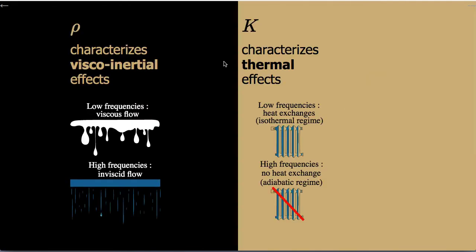So why deal with Rho and K? Zwikker and Kosten showed in 1949 that Rho characterizes the visco-inertial effects: at low frequencies we have viscous flow, and at higher frequencies we have inviscid flow. On the other side, K characterizes the thermal effects: at low frequencies there are heat exchanges between the air in the pores and the skeleton, while at higher frequencies no more heat exchange is possible. These two quantities thus describe two distinct dissipation mechanisms.